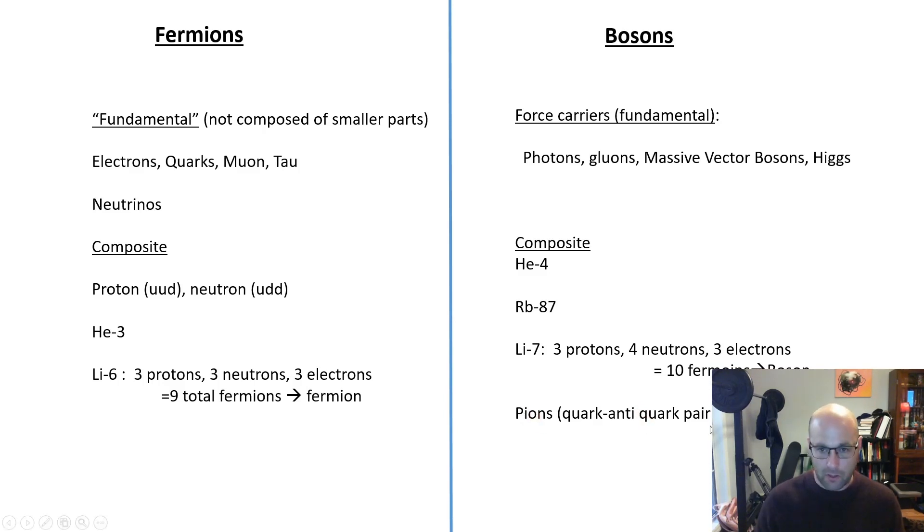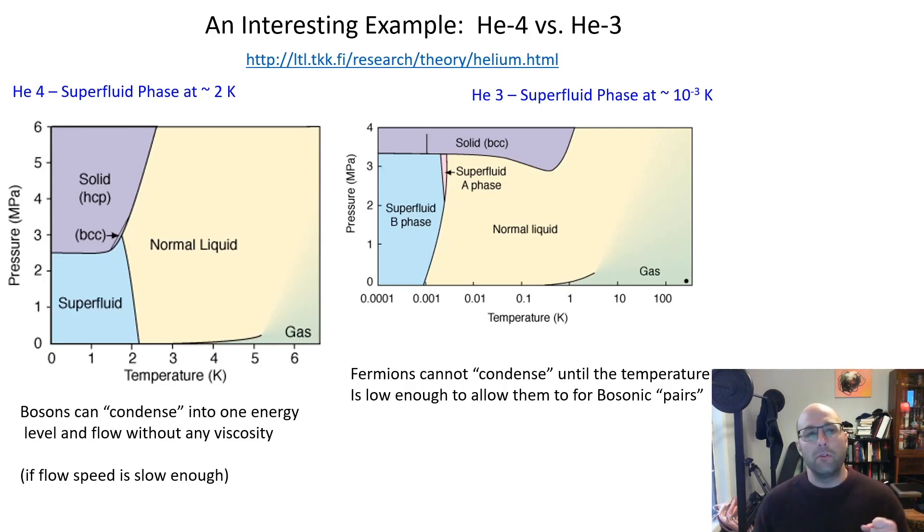Let's take a quick look at this example of helium-3 versus helium-4, which is really cool. Helium-4 is the normal isotope of helium, so two protons, two neutrons in the nucleus. If you cool it down, when you get to about two kelvin you find that suddenly the liquid can flow without any viscosity, without any friction. It can flow through capillaries, it can sort of run up the walls. There's a lot of really cool videos of this if you search.